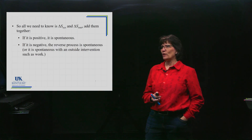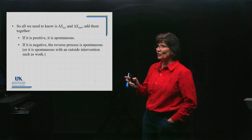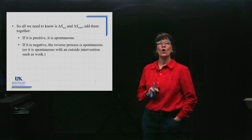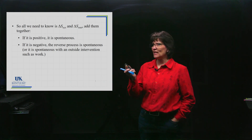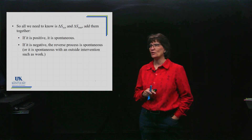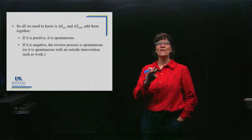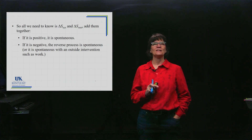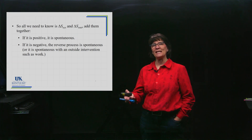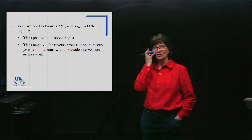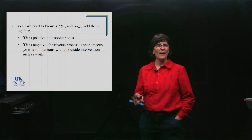If delta S of the universe is negative, we don't simply say the process is not spontaneous. Instead, we say the reverse process is spontaneous, or it will become spontaneous if you apply an outside intervention such as work. A very common example is a battery — the chemical reaction inside a battery occurs spontaneously, generating electrons and completing a circuit.